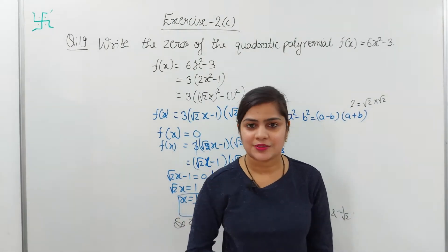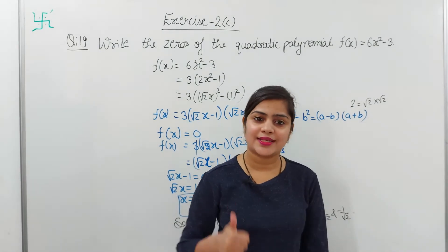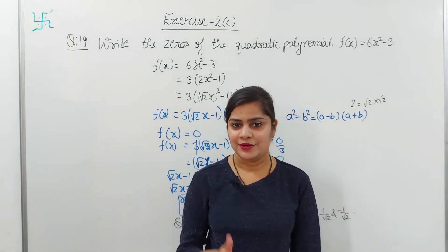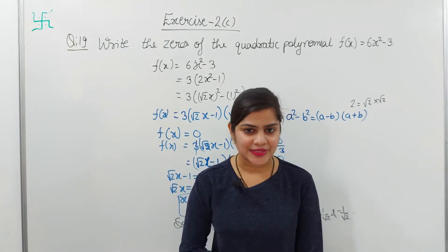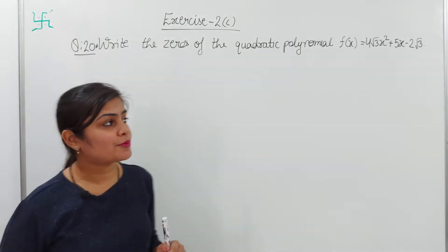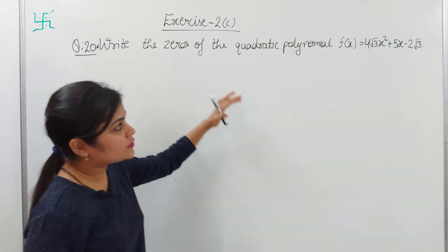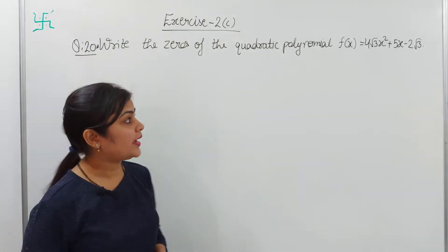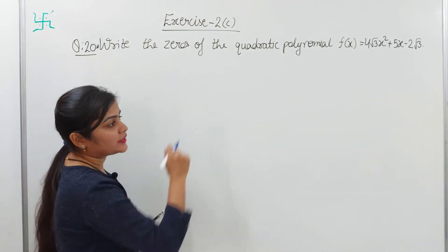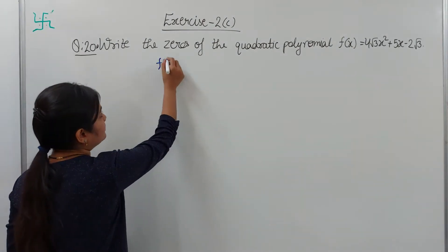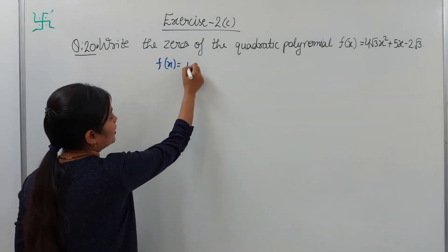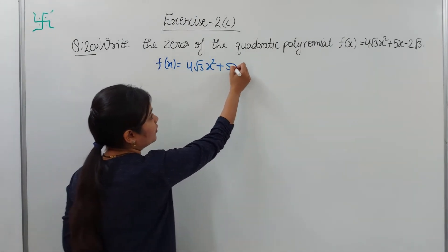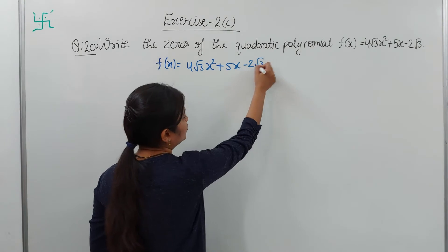This is how question number 19 is solved step by step — following this approach will get you full marks. Now let's solve question number 20. If you haven't liked the video yet, please like and comment if this was understood. Question number 20: write the zeros of the quadratic polynomial fx equals to 4root3·x² plus 5x minus 2root3.